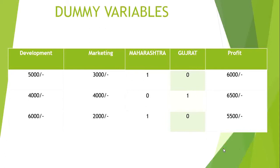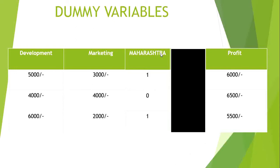So you should only include n minus one dummy columns. For example, if you have 3 categorical values, you should only use 2 of them. We always have to omit one column to avoid the dummy variable trap. Keep that in mind and avoid doing this mistake.